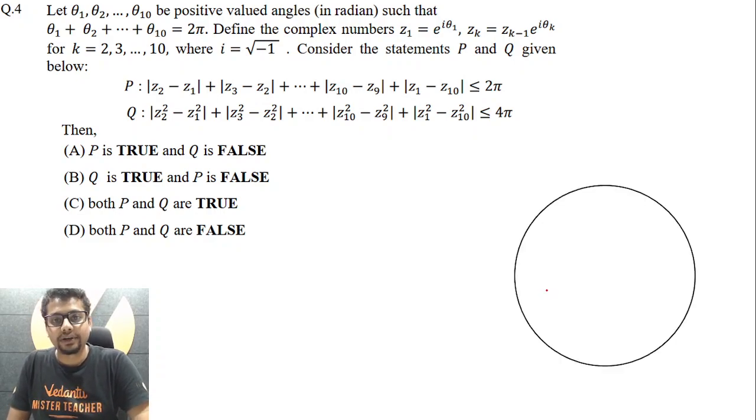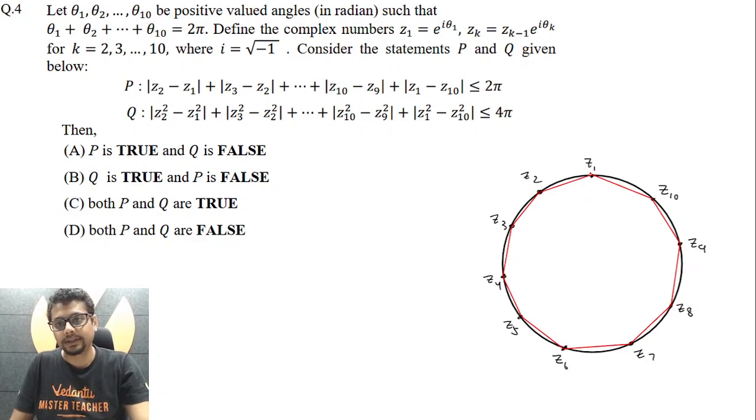I hope you read the question very carefully. You might have observed that Z1, Z2, Z3, all so and so forth up till Z10, they all lie on a circle centered at origin and radius 1. Why? Because mod Zi, whether it is Z1 or Z2 or whatever, mod Zi for every i belonging to 1 to 10, that is 1. So I have put the points or rather the points represented by a complex number Z1 to Z10 on the circle of unit radius and centered at origin.